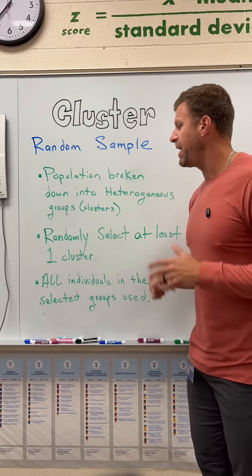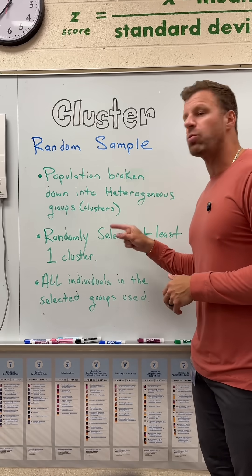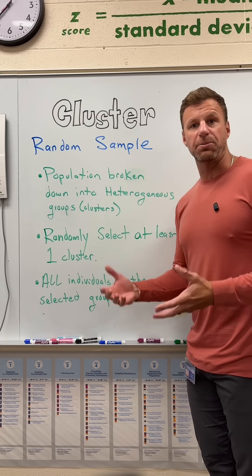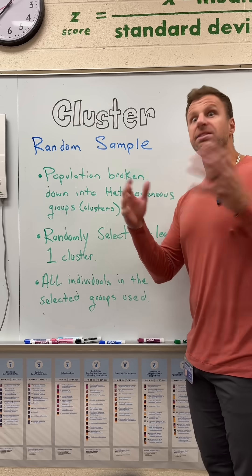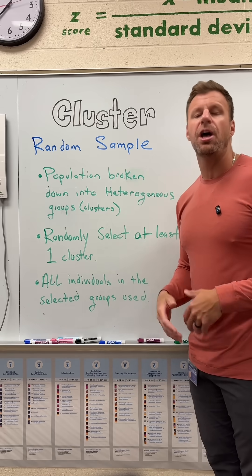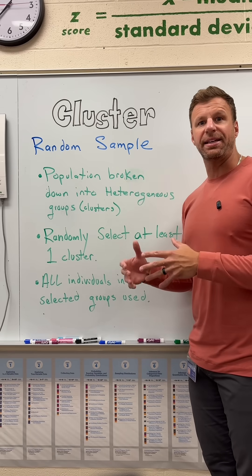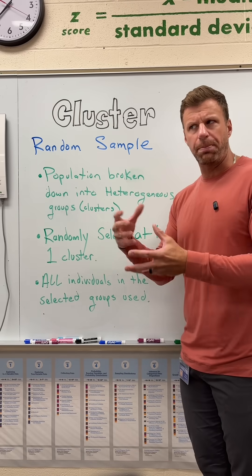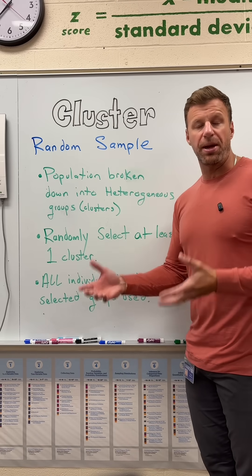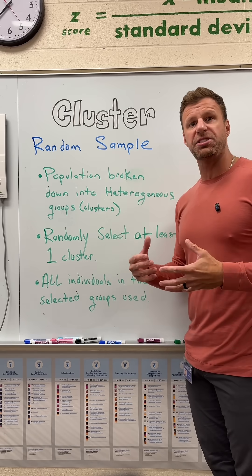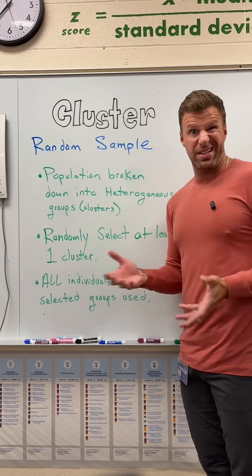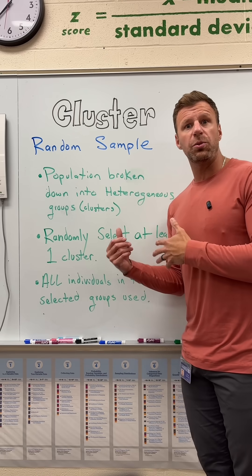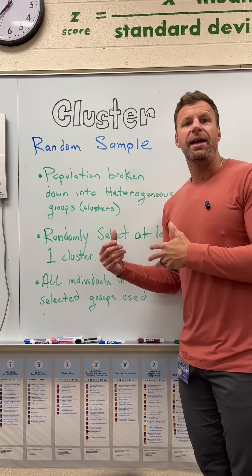You're going to randomly select at least one cluster, and every single individual in that selected cluster becomes part of your sample. If you've got a ton of clusters you could select two, three, or four, but you must select at least one. The key idea is that since each cluster is like a mini population, it really doesn't matter which one gets picked.